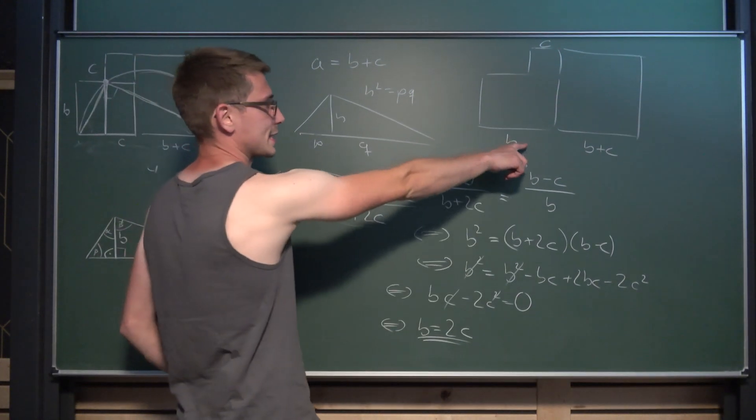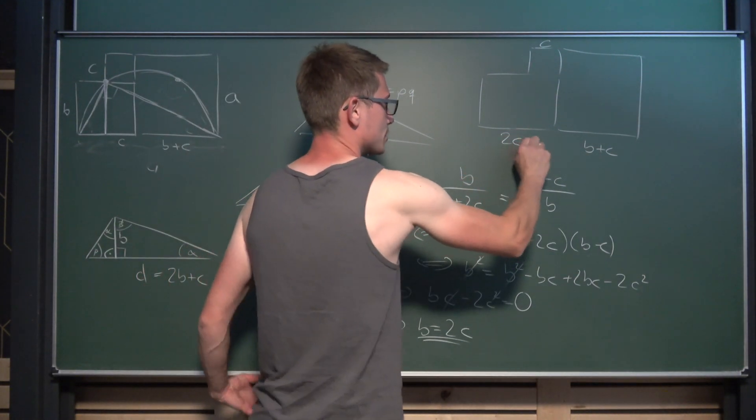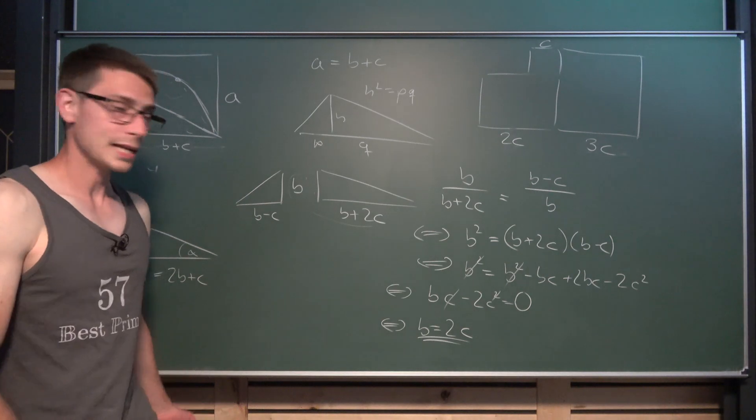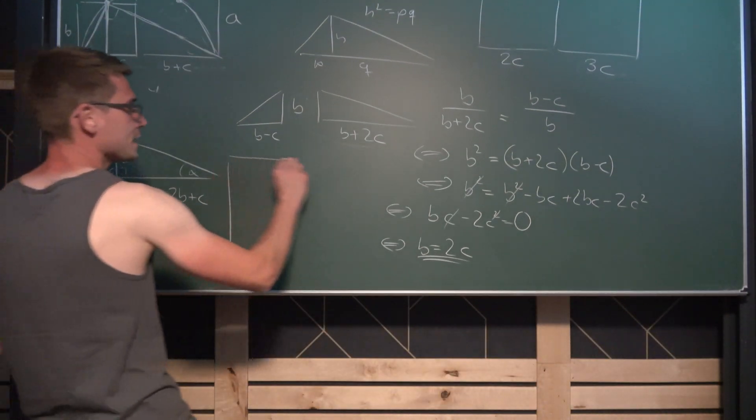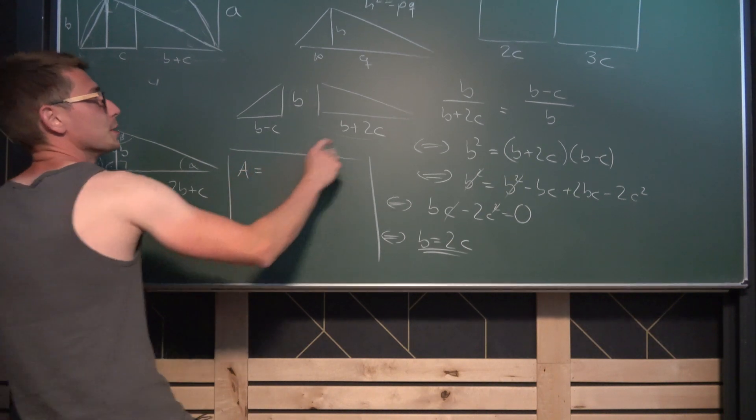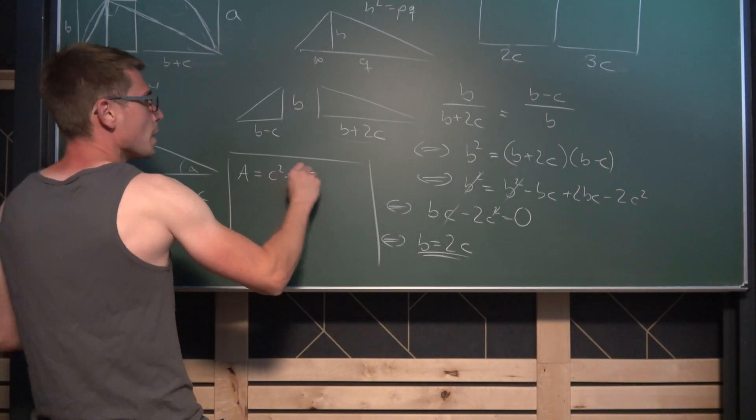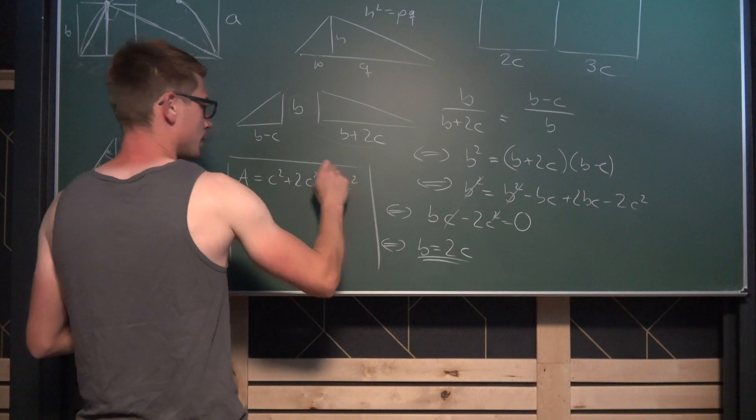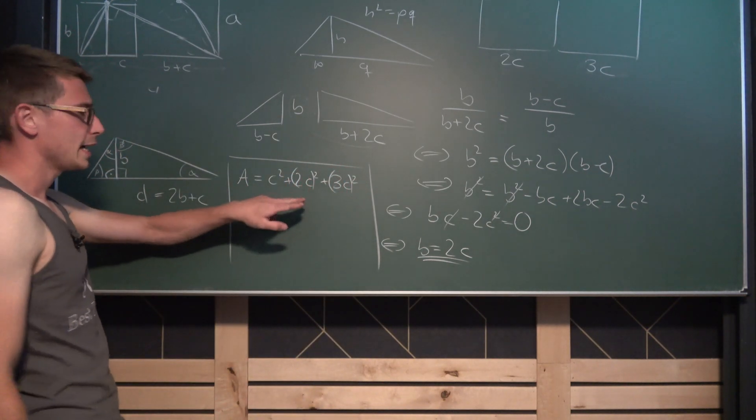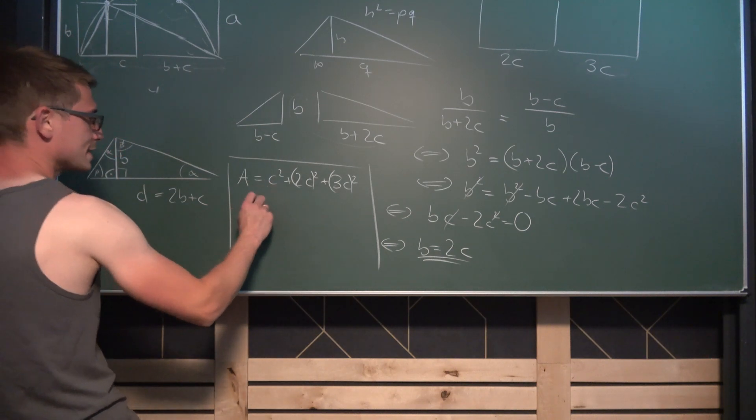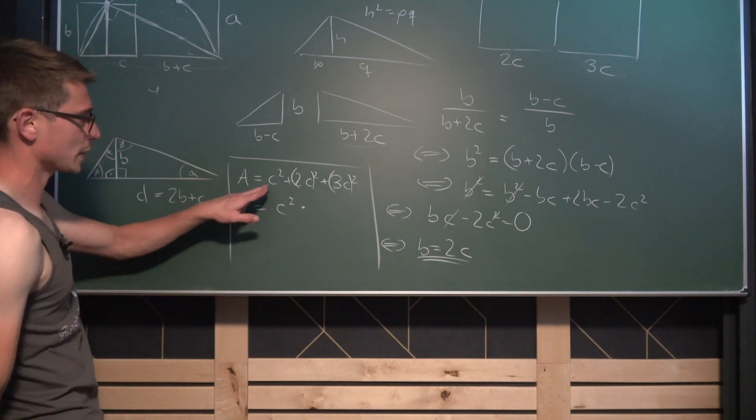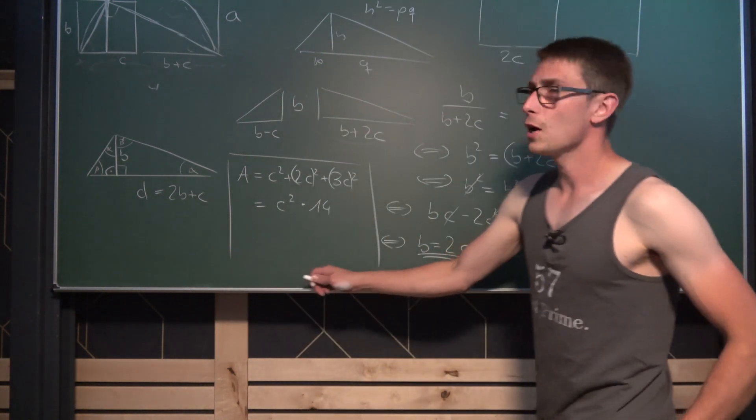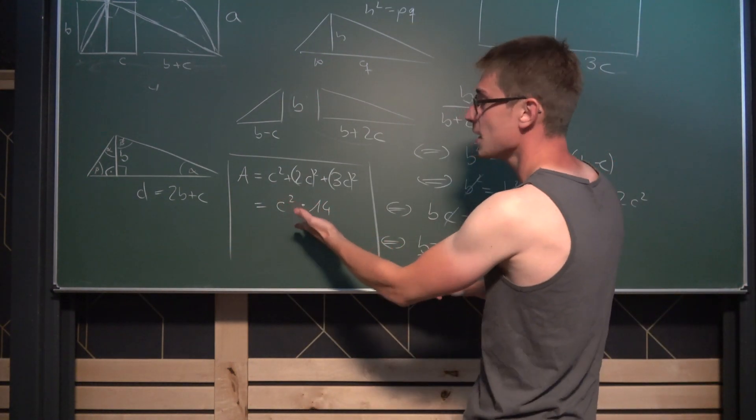So taking a look at our sketch now, we are going to notice that B is the same as 2C, and since B is equal to 2C, this last one must be 3C. Now we can get ourselves the area of those three squares combined. The area is going to be C squared plus 2C squared plus 3C squared. If we just multiply everything out we get C squared as a common factor times 1 plus 4, so 5 in total, plus 9 gives us 14. So the area of those three combined is C squared times 14.